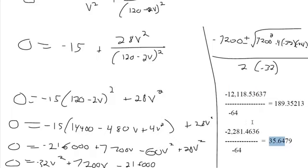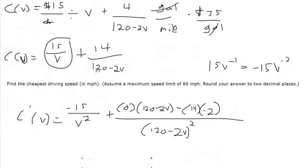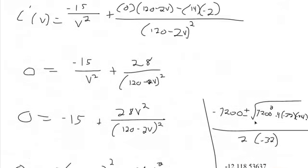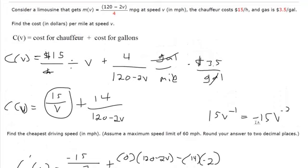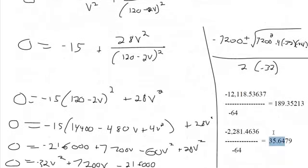What you'd want to do to make sure is to check numbers to the left or to the right. Plug in 35.65 into your cost function and test a number that's close to make sure 35.65 gives you the smallest. Or you could graph this equation and you'll notice that 35.65 is the lowest point.